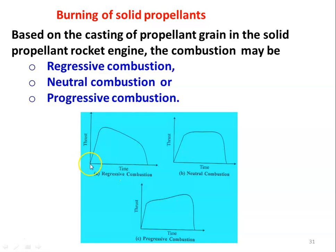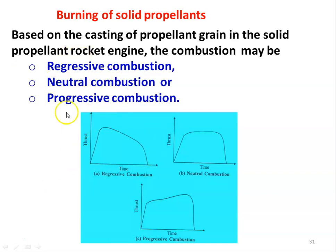In regressive combustion, the thrust produced initially increases — once combustion starts, gases are produced and thrust rises suddenly — then it gradually decreases. This is due to consumption of the propellant. When the propellant quantity decreases, heat produced also decreases, and when all propellants are exhausted, there is no thrust produced. This is called regressive combustion. The type of combustion and thrust produced depend on the arrangement of the propellant grain.